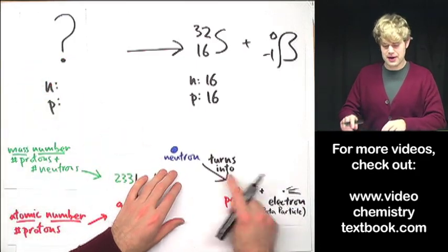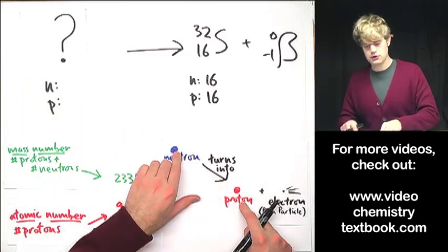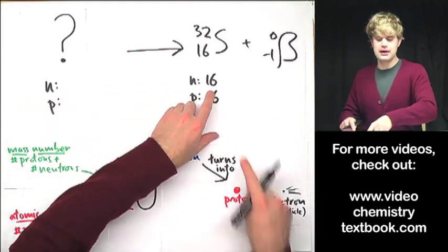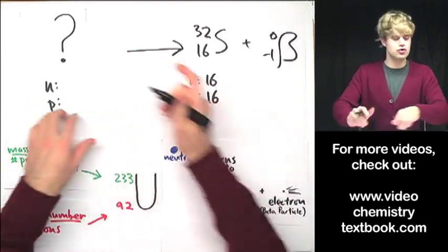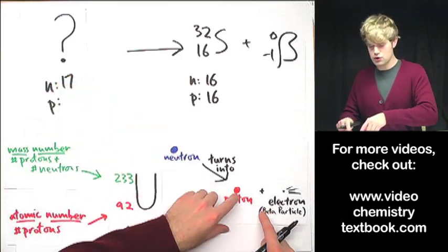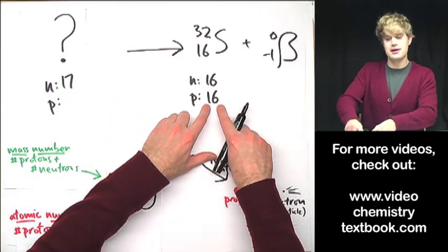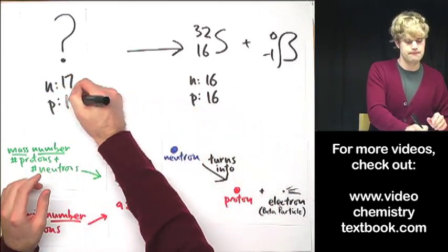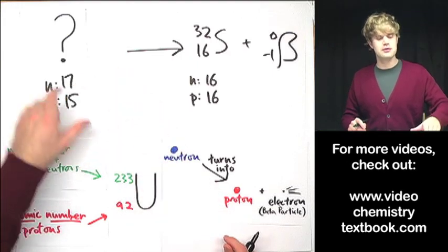So what did we start with here? What did we have before the beta decay happened? Well, again, in beta decay, a neutron turned into a proton. So before beta decay happened, we had one more neutron. So I had 17 neutrons. And since this neutron turned into a proton, before beta decay, I had one fewer proton. So I had 15 protons over here.